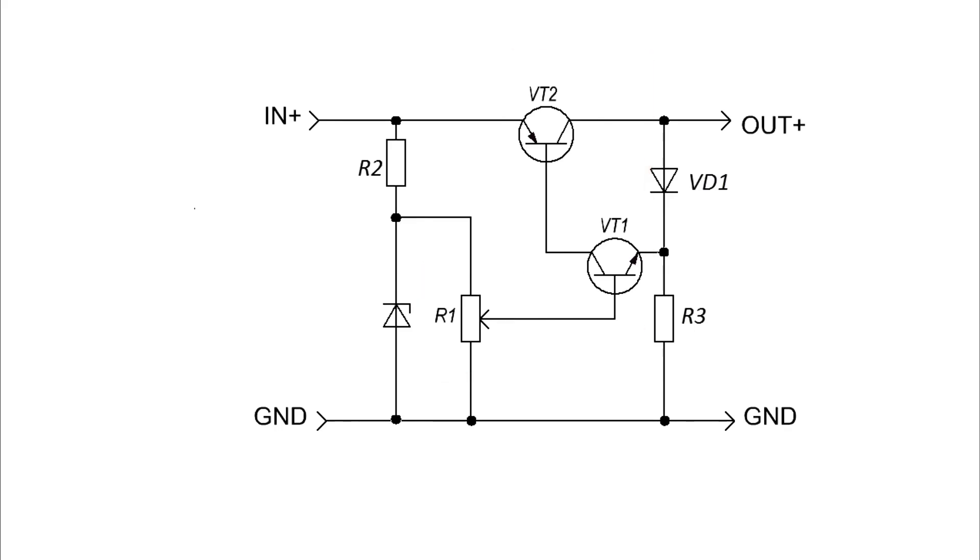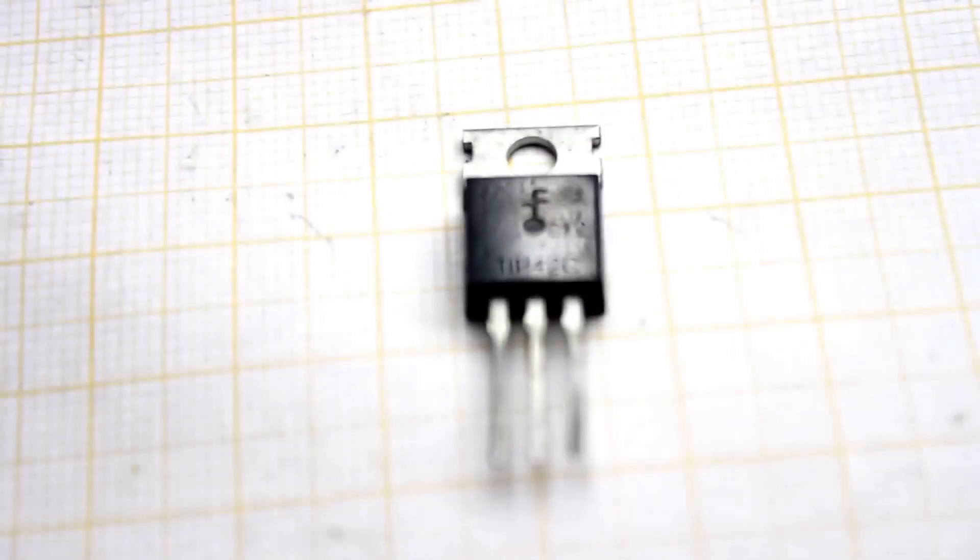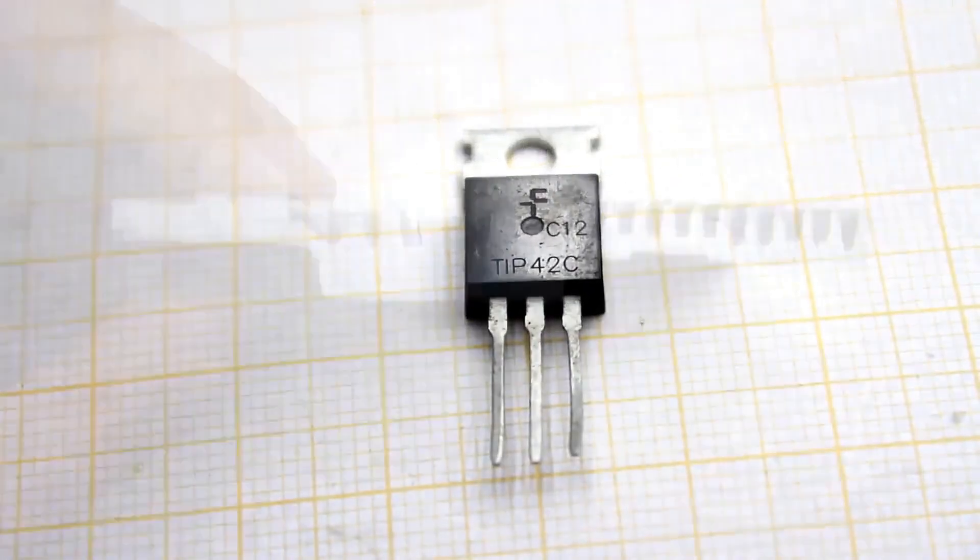The main current flows through the upper transistor. At high currents, it will heat up, so it needs a cooling heatsink.